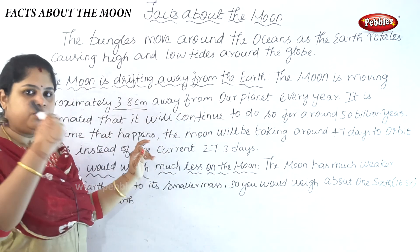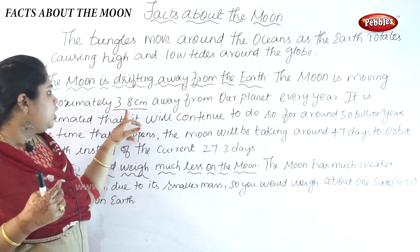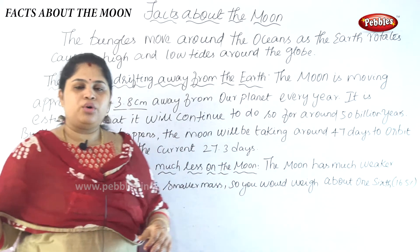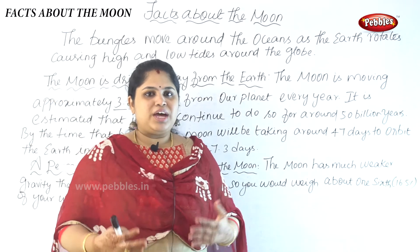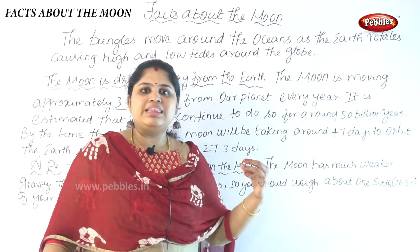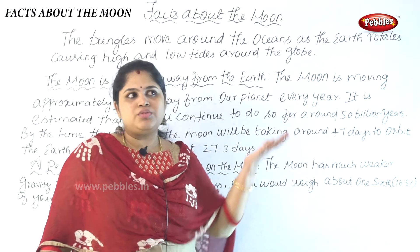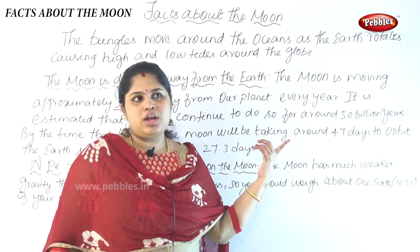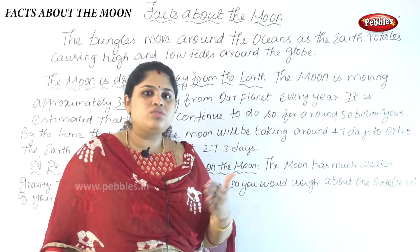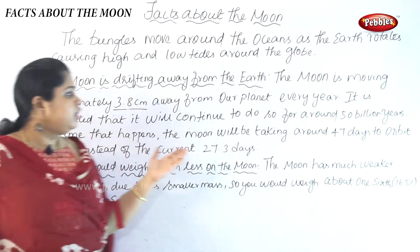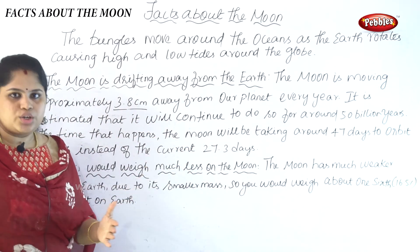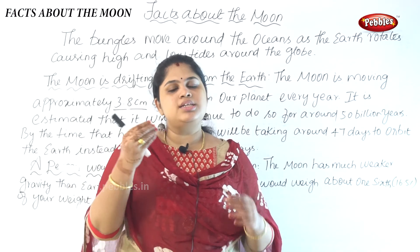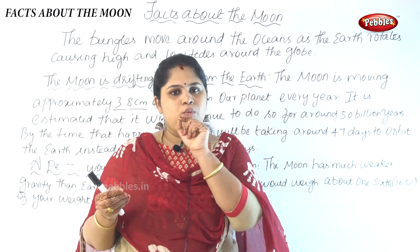Every year the moon keeps moving away from our planet by approximately 3.8 centimeters. So far we have come across about 15 billion years of this process. If this process keeps continuing, the moon will get further and further away from our planet — moving 3.8 centimeters per year.